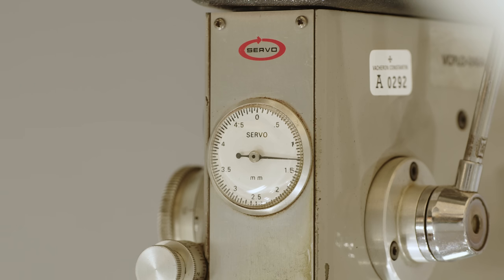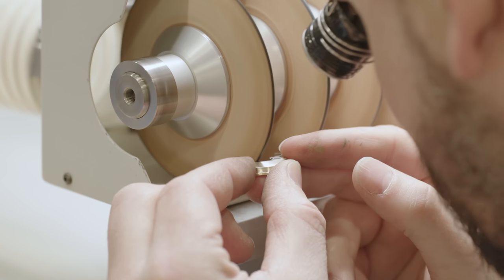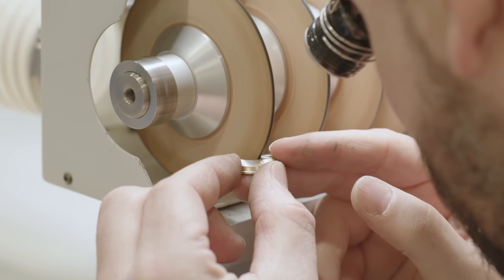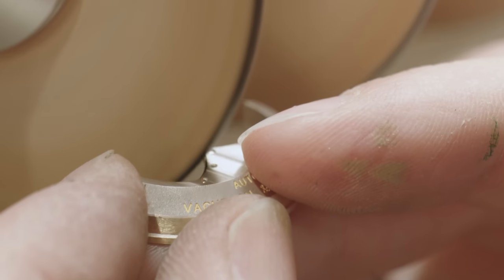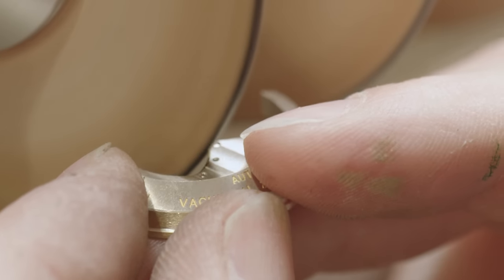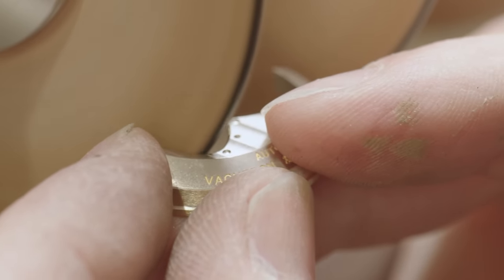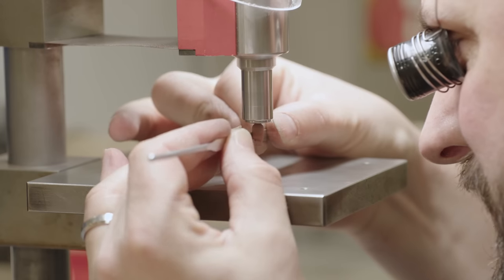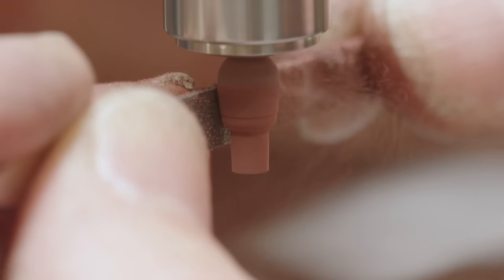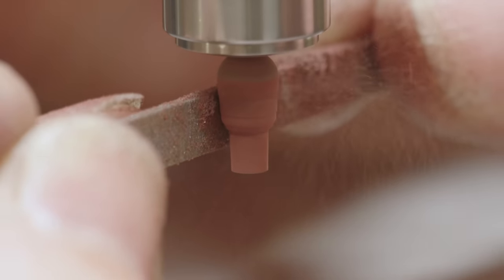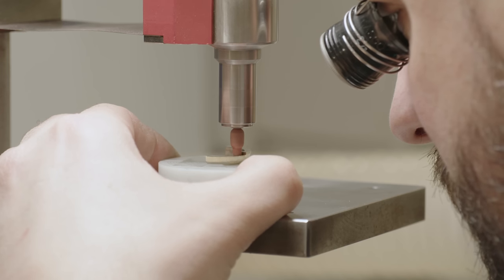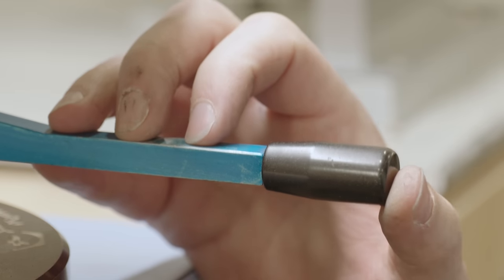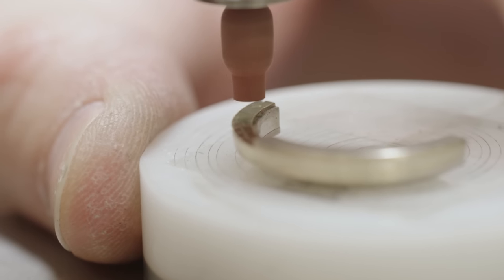With the movement fine-tuned for peak performance, it's to the aesthetic the restoration turns next. A Vacheron Constantin movement must be as beautiful as it is technically impressive. Each type of finish requires mastery of a different tool, and all demand immense skill and patience. Only time and practice can yield such precise results on such a tiny scale.